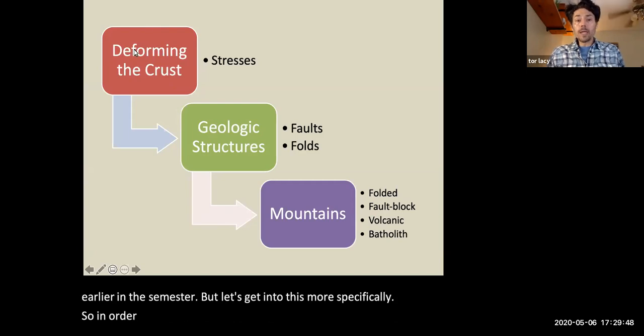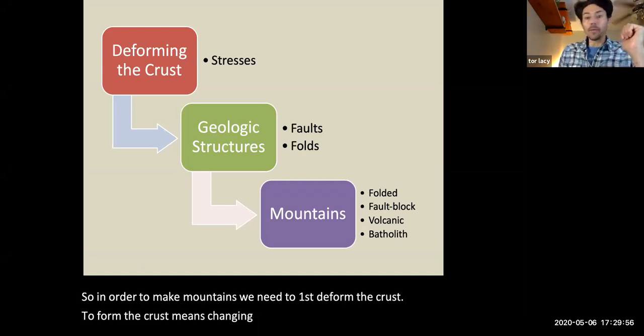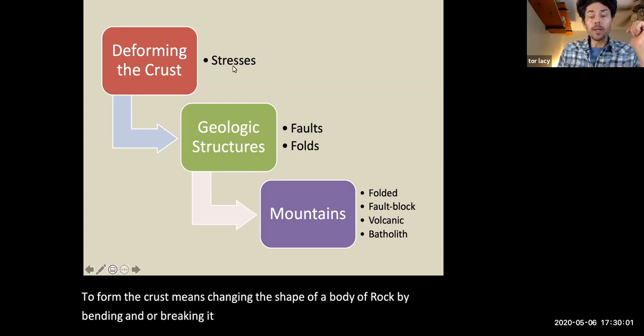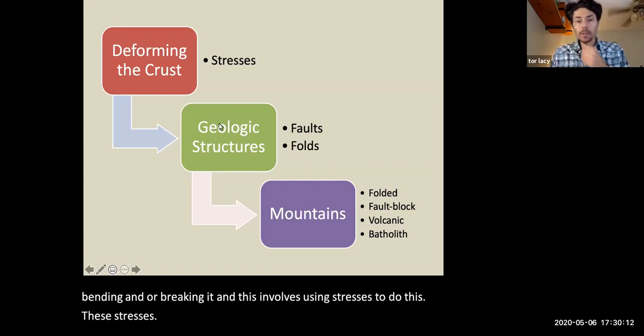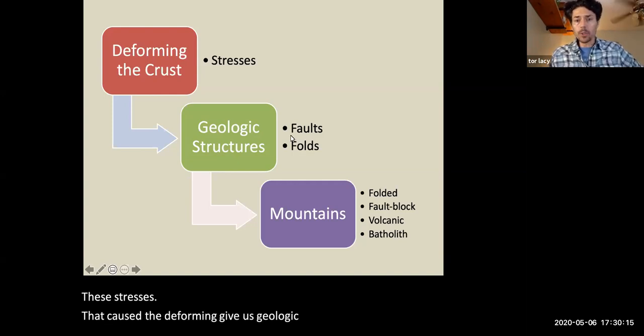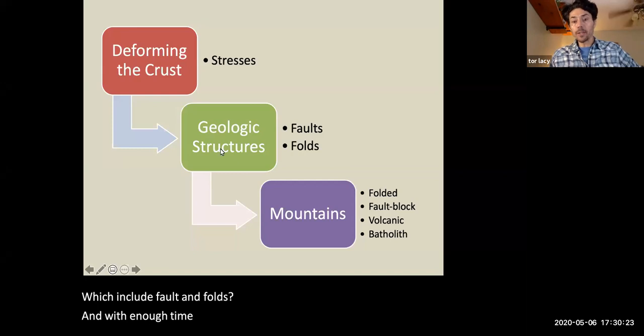So in order to make mountains, we need to first deform the crust. Deforming the crust means changing the shape of a body of rock by bending and or breaking it. And this involves using stresses to do this. These stresses that cause the deforming give us geologic structures, which include faults and folds.